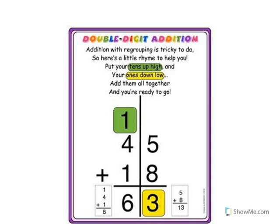Let's review our song: 'Put your tens up high and your ones down low, add them all together and you're ready to go!' We put the ten value up high and the one value down low. So if our number is 13, we put that 3 down and the 1 up. It's that simple!